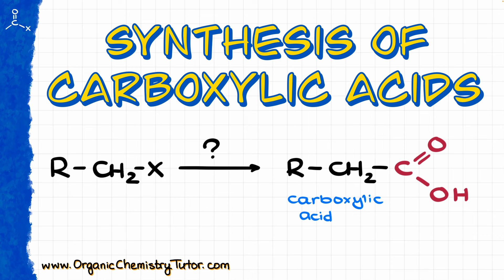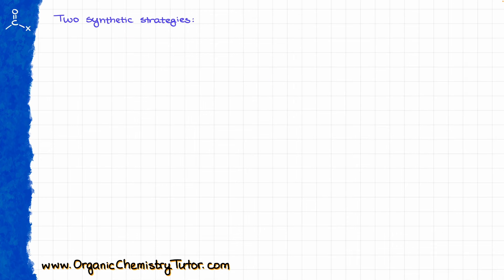It's not going to be the exhaustive list with all different reactions that are physically possible to make carboxylic acids, but we are going to go over the four main reactions that you are expected to know within the scope of a sophomore organic chemistry, so those are definitely the ones that your instructor will expect you to know for the exam. When it comes to the synthesis of carboxylic acids, we are going to be looking at two different synthetic strategies.